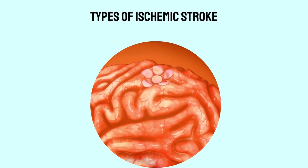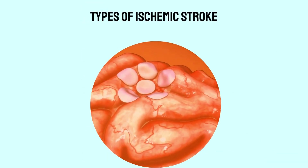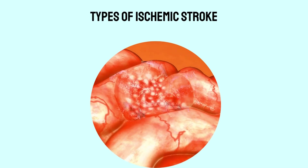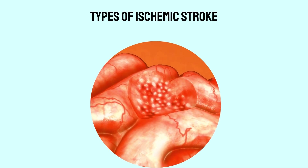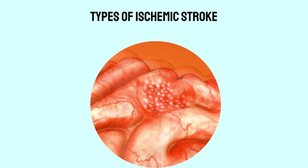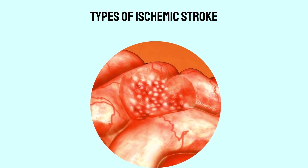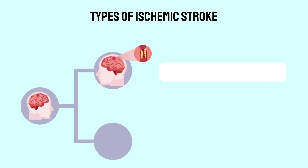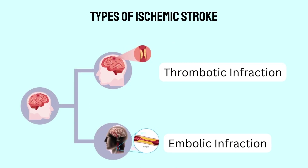As we know, occlusion in brain arteries causes stroke. This occlusion is mainly due to a plaque or an atherosclerotic mass. There are two types of ischemic strokes: thrombotic and embolic. Thrombotic strokes are caused by a blood clot, or thrombus, in an artery going to the brain.